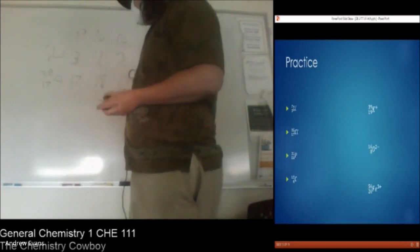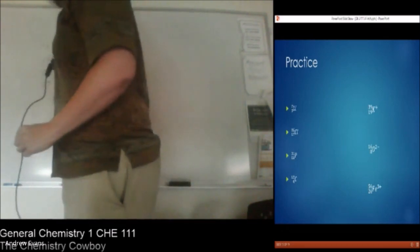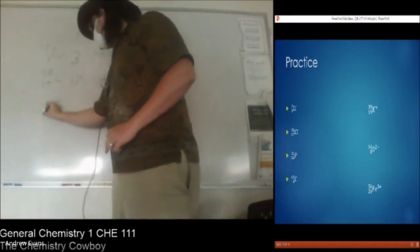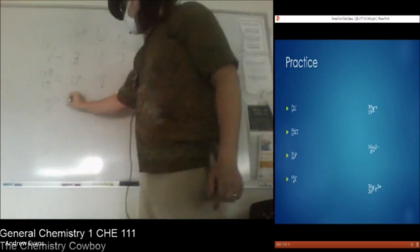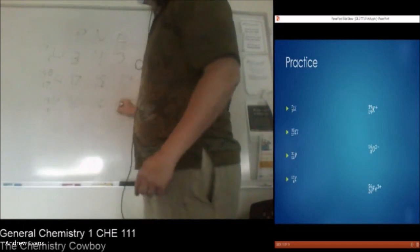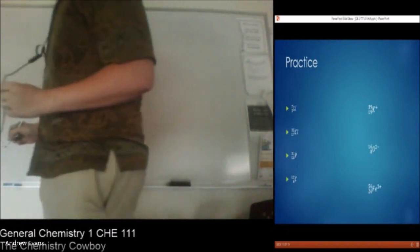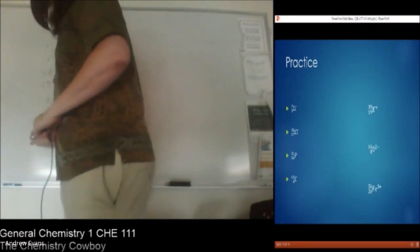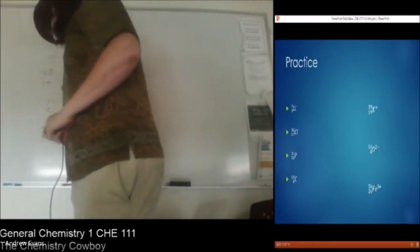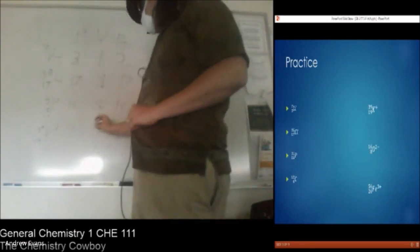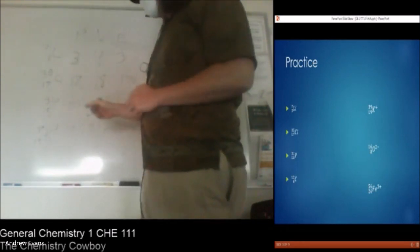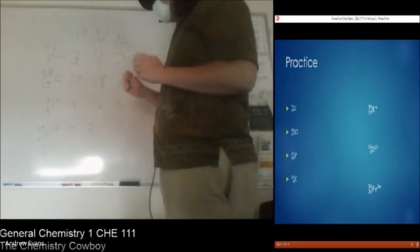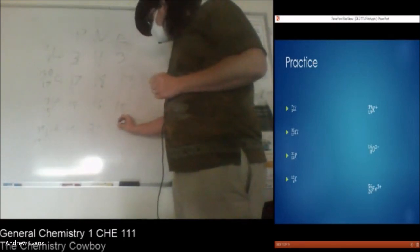But so the neutron count, the neutron count is determined by subtracting the atomic number from the mass number so seven minus three is four. Now because there is no charge it is equal number of protons and electrons so three. Chlorine 17-35, so 17 protons, 18 neutrons. Phosphorus 15-31, 15 protons, 16 neutrons, 15 electrons.